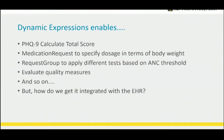This overall framework enables lots of use cases: I can calculate PHQ-9 total score on a questionnaire, build a medication request that specifies dosage in terms of body weight rather than a static value, use a request group to apply different tests based on ANC threshold or neutrophil count, evaluate quality measures, and so on. But how do we actually get that integrated with the EHR? I've got this thing that can perform these calculations, but I'd like to be able to call it from an EHR, especially in this workflow — hitting it from the medication prescribed event. That's the CDS hooks integration.